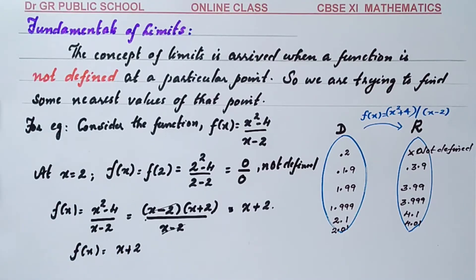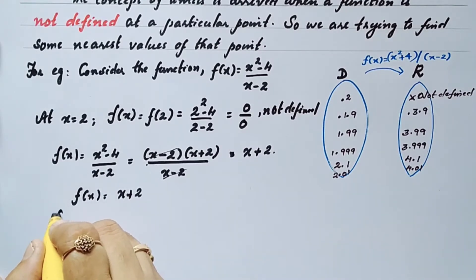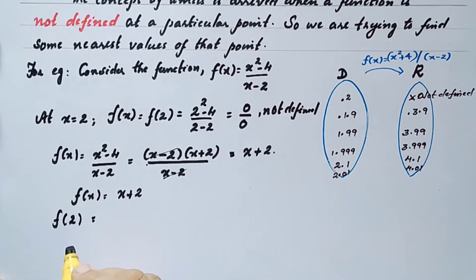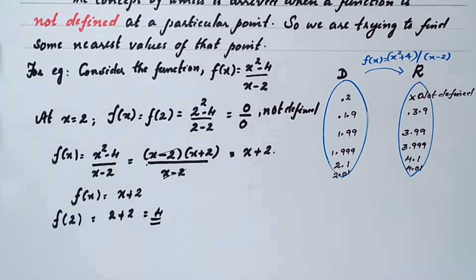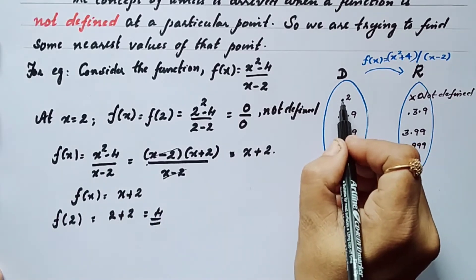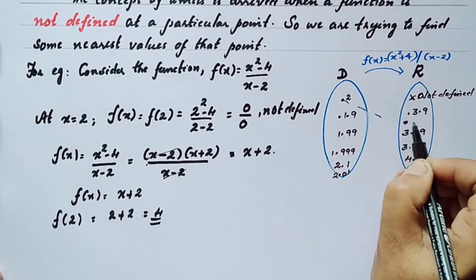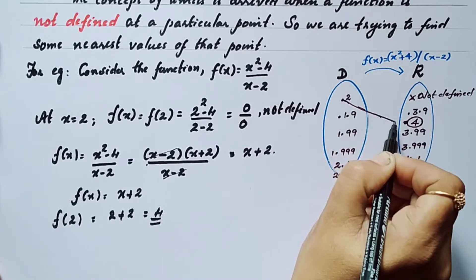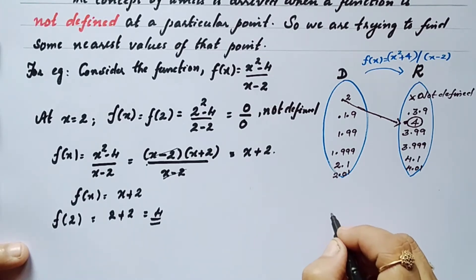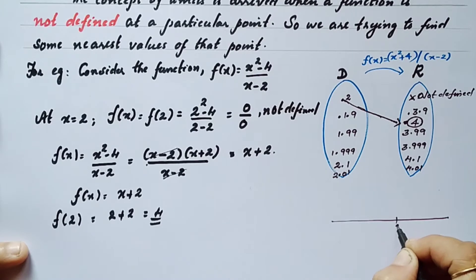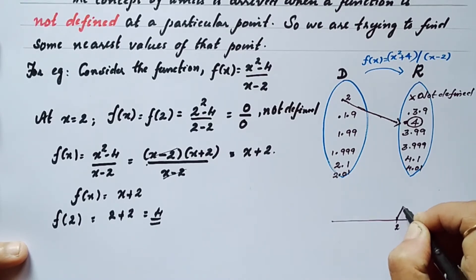Now if you substitute the value x as 2 in the simplified function, you get f(2) equals 2 plus 2 equal to 4. The value of the function at 2 becomes 4 after simplification. Consider the number line: the value 2 returns the value 4. Now consider values which are nearer to 2 but on the left side of 2.